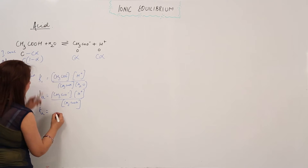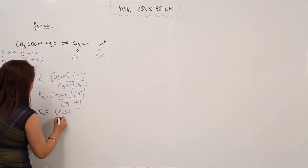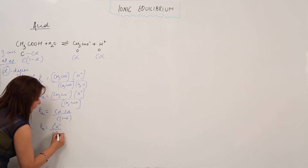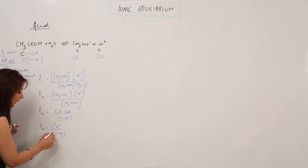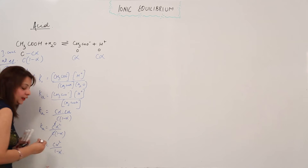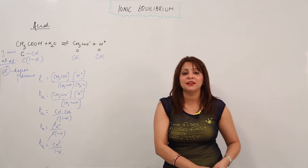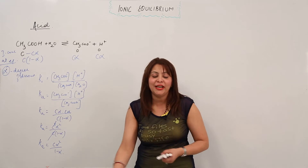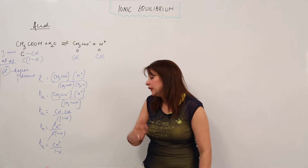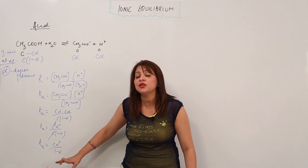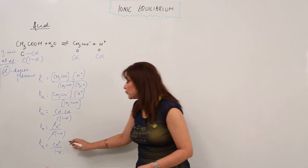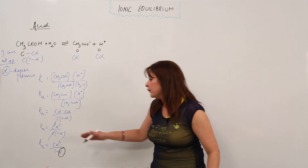Substituting the equilibrium values: Ka equals (C·alpha)(C·alpha) divided by C(1 - alpha), which gives C²·alpha² divided by C(1 - alpha). Cancelling one C, we get C·alpha² divided by (1 - alpha). Since acetic acid is a weak acid, it dissociates to a very small extent, so we can neglect alpha in the denominator (1 - alpha ≈ 1).